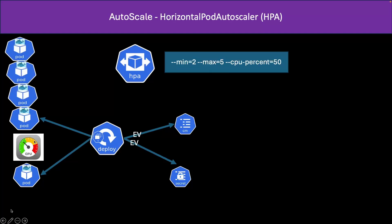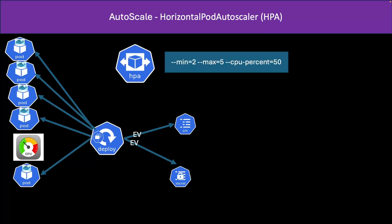If the CPU is increased, it will create a new pod. If it's again increased beyond 50%, then it will create another pod, and so on. But it will never go beyond five pods, because we have mentioned that the maximum number of pods it should create automatically is five. This is the theory part, so let's jump into our lab.